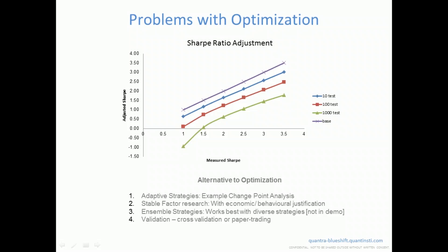Hidden Markov models are also possible on the BlueShift platform to track regime changes statistically. Looking at the backtest performance, the naïve strategy (always going in one direction) gives minus 11% cumulative returns with a very low Sharpe, while a basic change-point improvement brings it to positive 21% — almost a 32 percentage point jump — with Sharpe improving to 0.34. That's a huge improvement based on a very basic statistical method, rather than depending on parameter optimization.